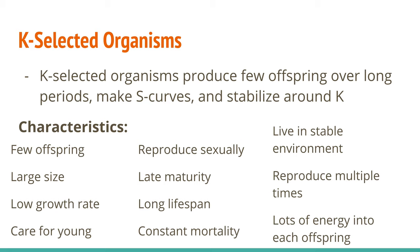Sexual reproduction is characteristic of K-selected species because it literally takes longer — you have a gestational period instead of just budding off a copy of yourself. They tend to reach maturity later, but they also live longer and reproduce multiple times over that lifespan. So they can continue making a couple babies at a time, putting lots of energy into them to ensure survival, and then make new ones when they're ready. They tend to live in stable environments, which makes sense because if you're going to take a lot of time and energy to raise offspring, you don't want them dying off to random environmental fluctuations.